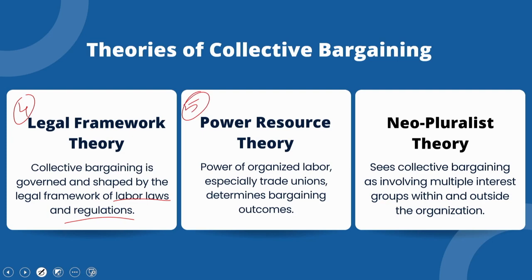The fifth aspect is power resource theory, where the power of organized labor — especially trade unions — determines bargaining outcomes. The stronger the unions, the more bargaining power workers have to secure better terms through collective action like strikes. Union power depends on factors like membership levels, solidarity, leadership, and access to resources. For example, a union may threaten strike action to win a wage increase. The sixth is neo-pluralist theory, which sees collective bargaining as involving multiple interest groups within and outside the organization — unions, management, community groups, and shareholders — who negotiate to balance the interests of all stakeholders. For instance, a union may agree to wage restraint in exchange for a community benefits package.